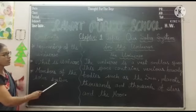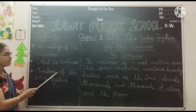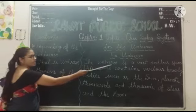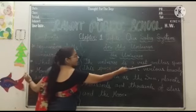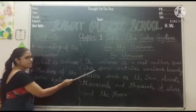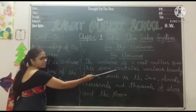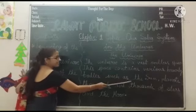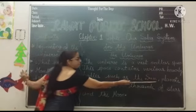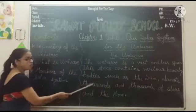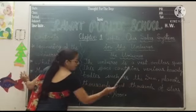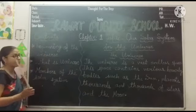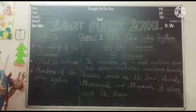So first of all, what is universe? Universe is Brahman. The universe is a vast endless space. This space contains various heavenly bodies such as the sun, planets, thousands and thousands of stars, and the moon. Universe is a big endless space.